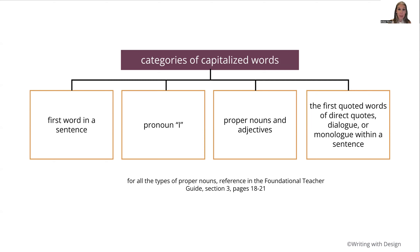The second rule is capitalizing the pronoun I. Anytime we reference ourselves in our writing, we need to capitalize the word I. This is also a big habit — sometimes students like to put a lowercase I with a heart instead of the dot. But for standardized academic writing, we really do need the pronoun I capitalized, and that's a big habit for students to get into and maintain.